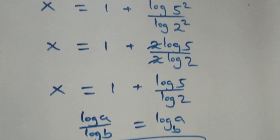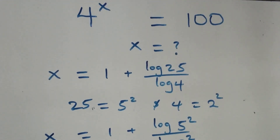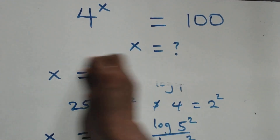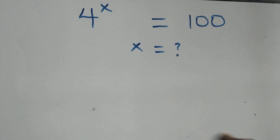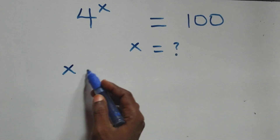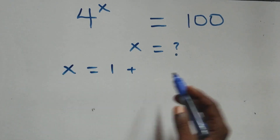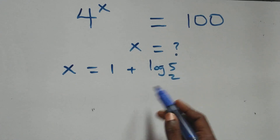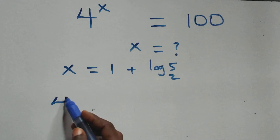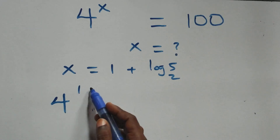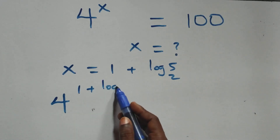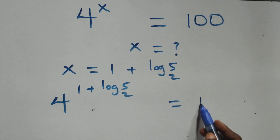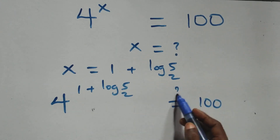Let's check if this satisfies the given problem. We substitute the value of x, which is 1 plus log₂5. What we have becomes: 4 raised to the power (1 plus log₂5) equals 100 on this side.